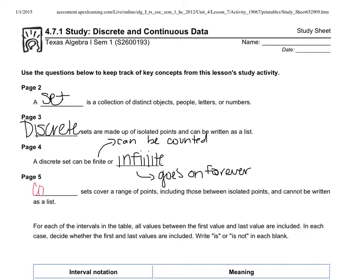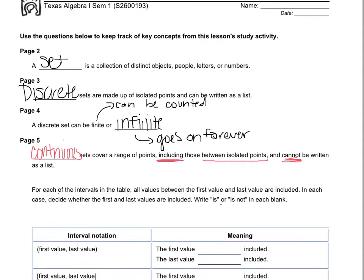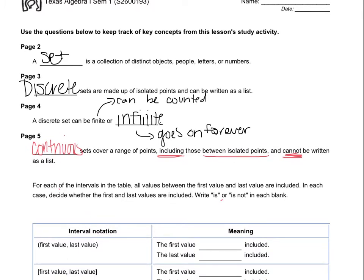Our other type of set is a continuous set. A continuous set covers a range of points, including those between isolated points, and cannot be written as a list. An example of a continuous set would be all the numbers between one and two — you would not want to write all those numbers because you'd be writing every single decimal remotely possible, which would make you a completely insane person.